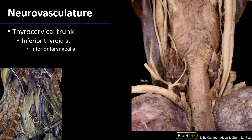The thyroid and larynx are also supplied by branches of the thyrocervical trunk, which is off the first part of the subclavian artery. There's the thyrocervical trunk, and we have an inferior thyroid artery which serves the thyroid gland and parathyroid glands. From that there is also an inferior laryngeal artery. So when we think about blood supply to the larynx there are two laryngeal arteries: the superior laryngeal artery, a branch of the superior thyroid artery from the external carotid, and the inferior laryngeal artery, a branch of the inferior thyroid artery from the thyrocervical trunk. Thank you very much for your time.